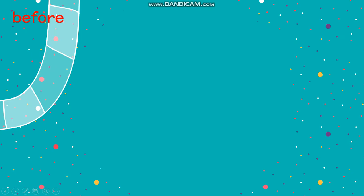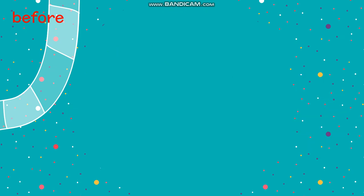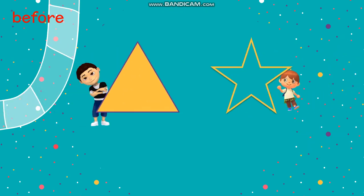Now let's try with shapes. Here is a circle and here is a square. The circle is before the square. Here is a triangle and here is a star. The triangle is before the star.